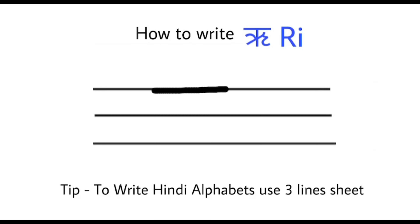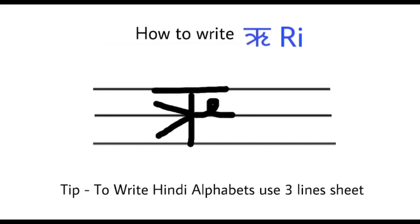So first, draw a sleeping line, then draw a standing line. From the middle of the standing line, draw English capital letter V shape and a loop. From the loop, join English capital letter C shape.